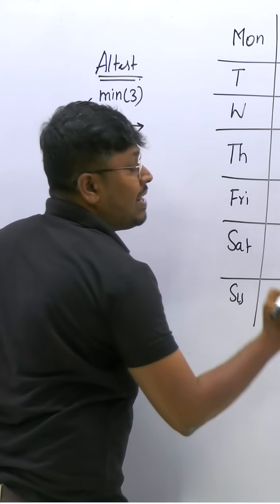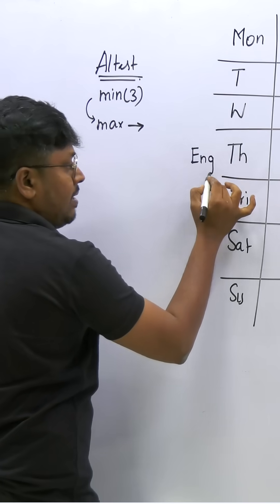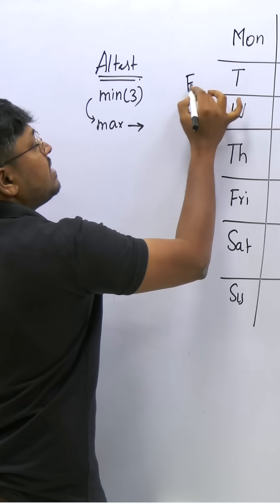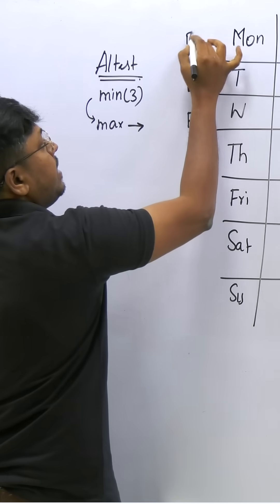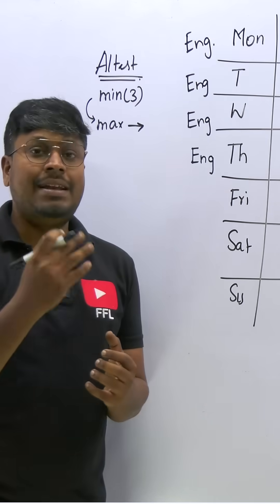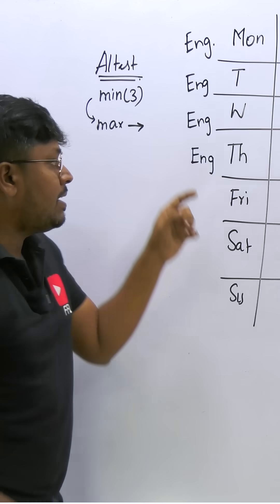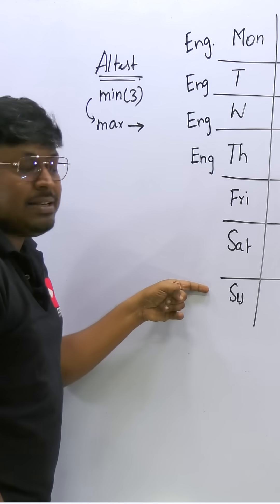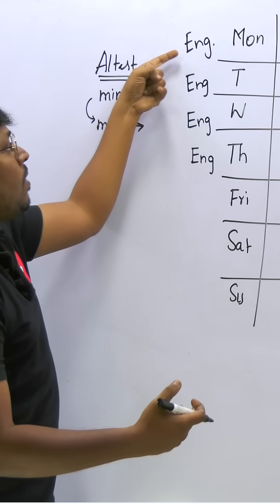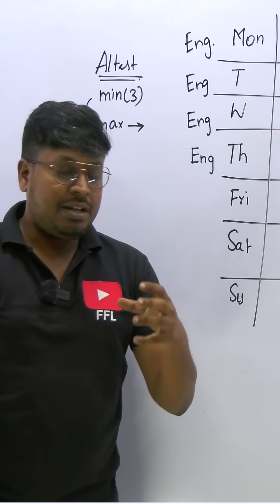If I fix English on Thursday, yes — there are three subjects taught before English. That will be one valid case. English can also be placed on Wednesday, Tuesday, or Monday. All these placements satisfy 'minimum three subjects before English.' On Thursday there are minimum three; maximum it can be four, five, or six.